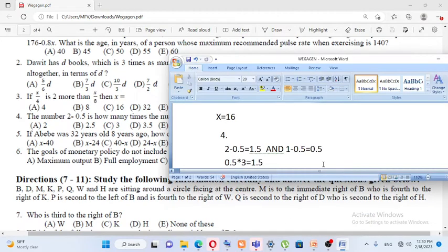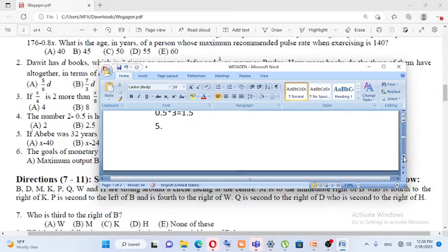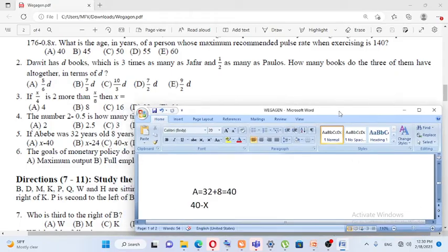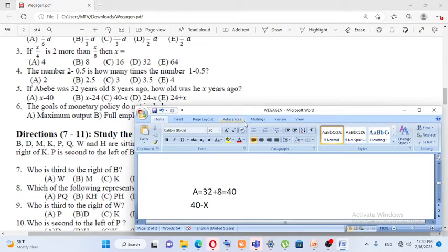Years ago, so if Abe was 32 years old 8 years ago, how old was he x years ago? If he was 32 years old 8 years ago then, his current age is 40. Then x years ago he was 40 minus x. So the answer is C.